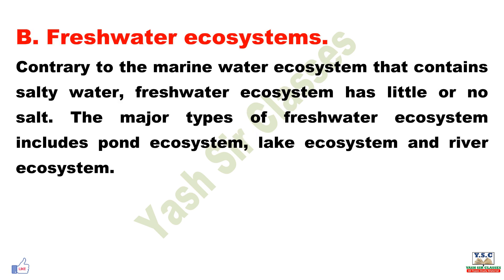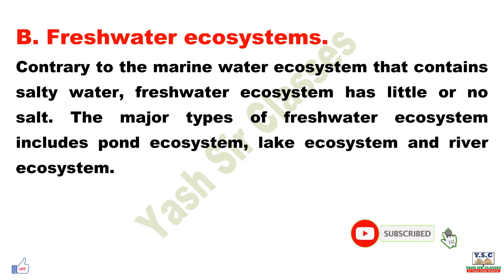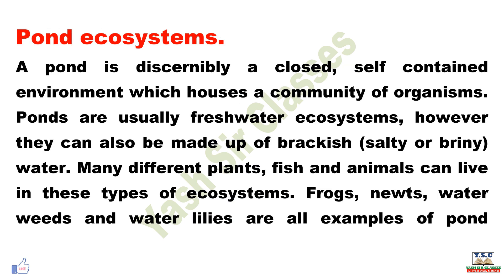In contrast to the marine ecosystem that contains salty water, a freshwater ecosystem has little or no salt. The major types of freshwater ecosystem include pond ecosystem, lake ecosystem, and river ecosystem.